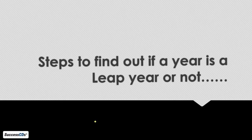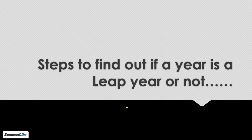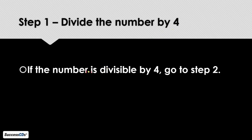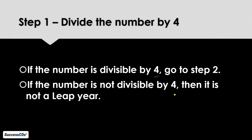Now let us see the steps to find out if a year is a leap year or not. If we are given a year and we have to calculate whether it is a leap year, here are the steps to follow. Step 1: Divide the number by 4. You will divide that year's number by 4. If the number is exactly divisible by 4 with no remainder, then we go to Step 2. If it is not divisible by 4, then we declare that it is not a leap year.